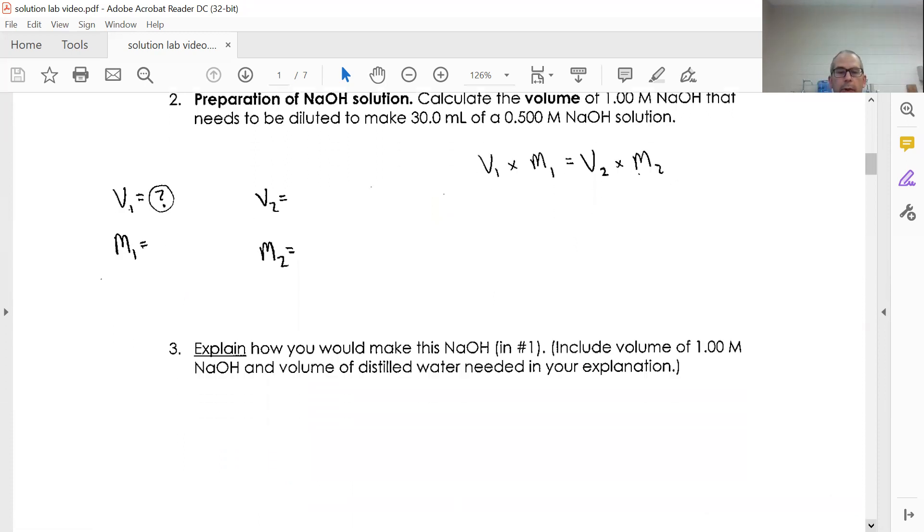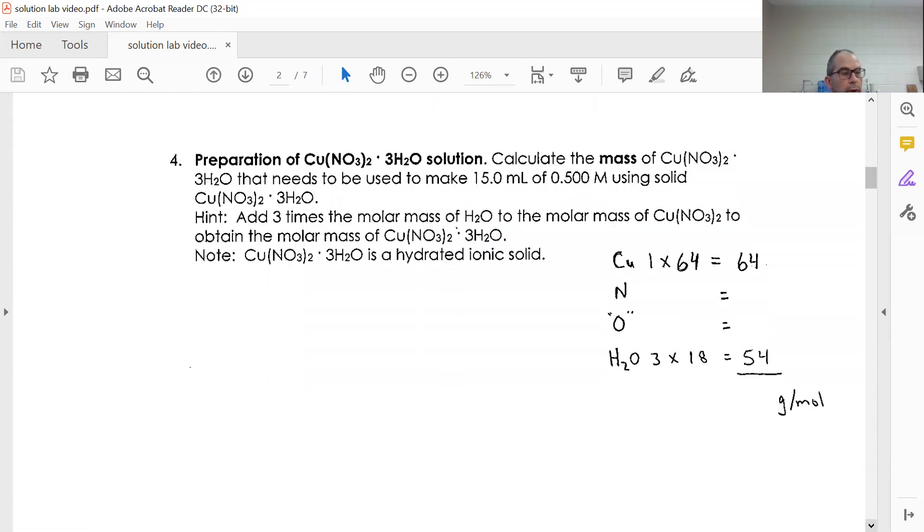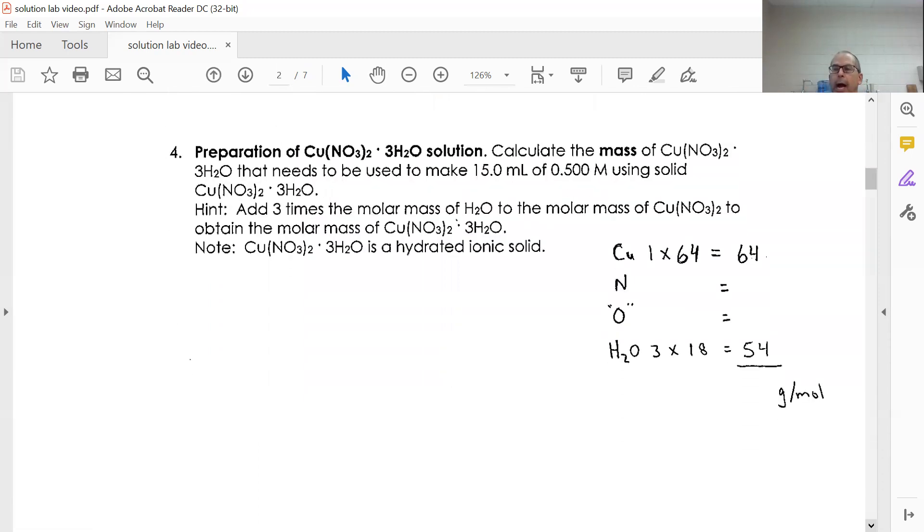The next thing you're going to do is you're going to make a solution from solid copper nitrate. So you're going to have to make this from a solid. And the hint here is you know the liters, you know the molarity, so you should be able to figure out the moles. If you know the moles, you should be able to figure out the grams you're going to need to use. So yes, you're going to have to calculate the amount of grams that you need to use here.